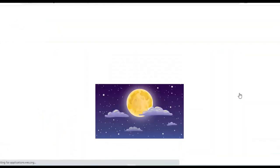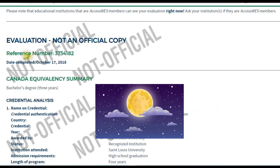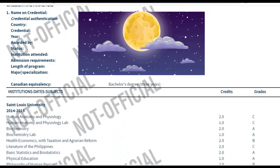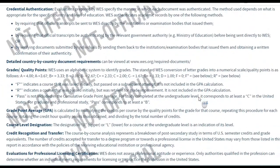Under 'View Electronic Report,' note that this is not an official copy since the official copy will be mailed to you on paper. You will see your reference number, your Canadian equivalency, your GPA grades, and that's it. Go ahead and apply for WES if you prefer it.